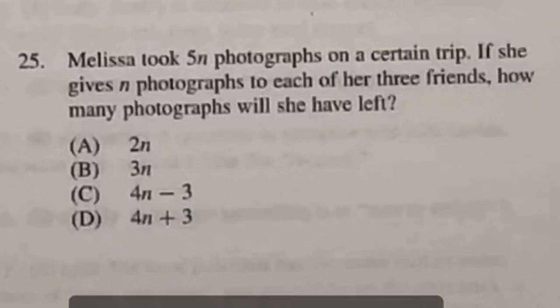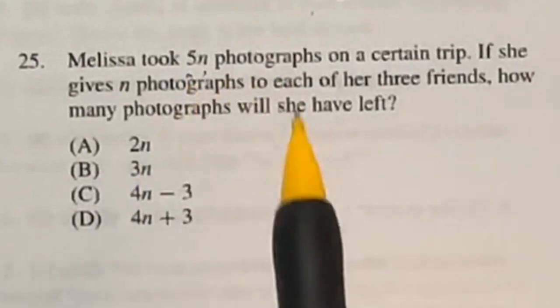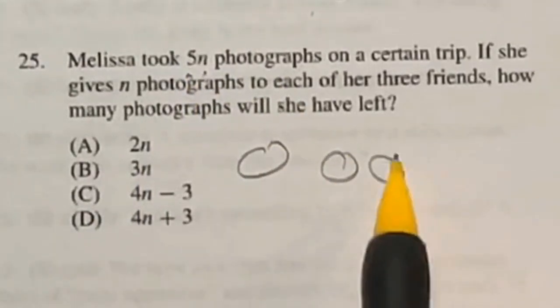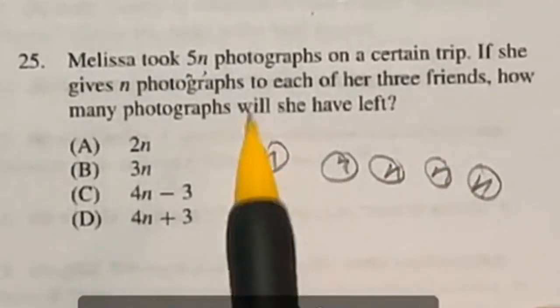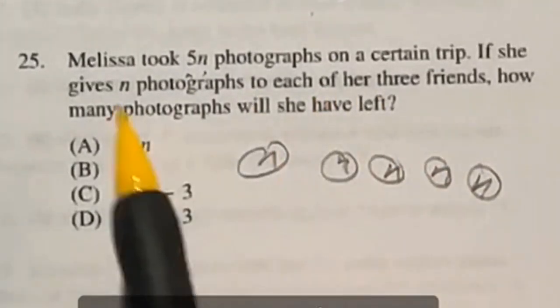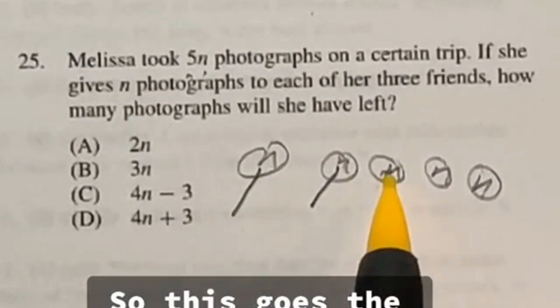So I'm going to reword this question for 25 to help out a bit. It says that we have 5 groups of N photos. So you have 5 groups of N photos. Now we're going to give 3 friends one of those groups of N. So this goes to friend 1, this goes to friend 2, and this goes to friend 3.